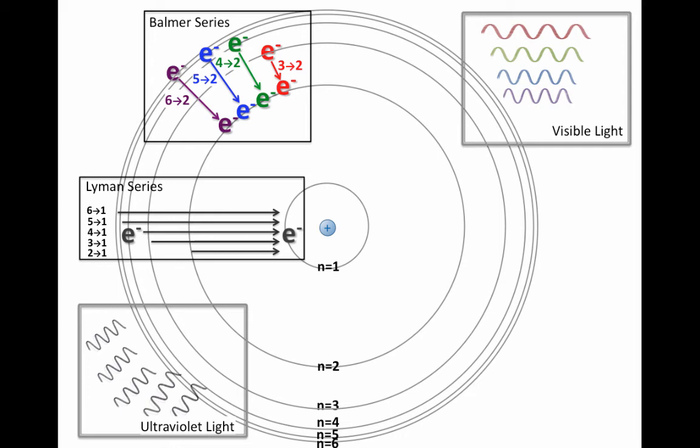What do you know about the energy of ultraviolet light compared to the energy of visible light? Correct. Ultraviolet radiation has higher energy, which can be explained by the larger fall by the electron, going all the way down to n equals 1. So these series of waves given off by this electron transition are not visible to us. They all fall in the ultraviolet range of the spectrum.